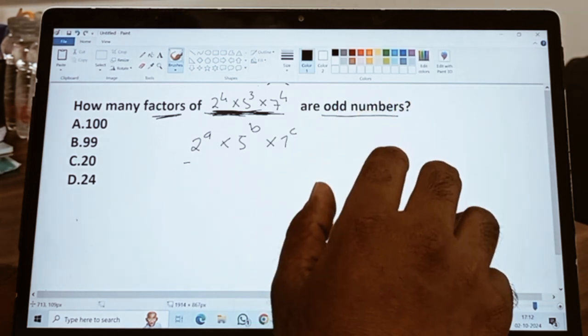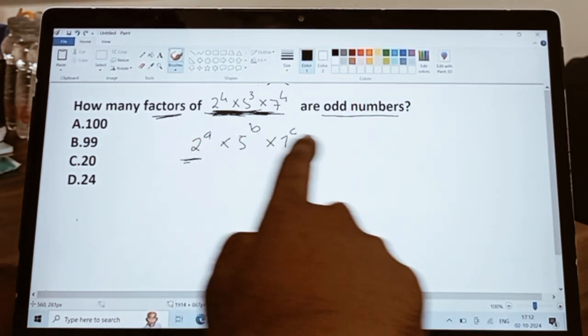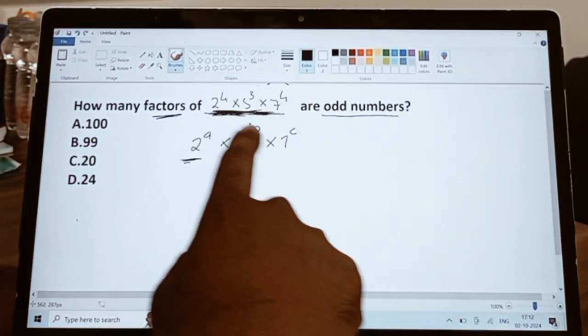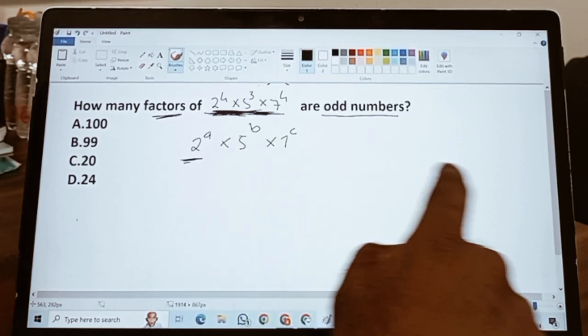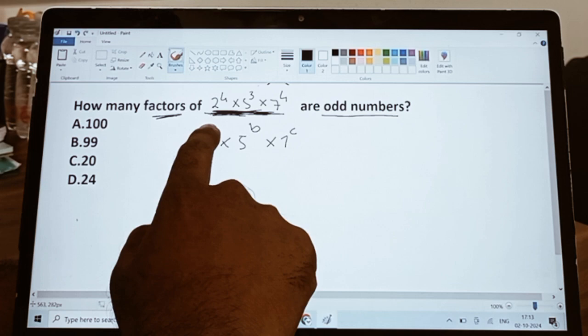After multiplying this number you must be getting odd numbers. Now you must start thinking when will I get an odd number. First thing: 2^a cannot be a proper value, it has to be 1, or you must neglect this value. Why? Because if you multiply any number with 2, you will get an even number, which is not what we have to do here, right?